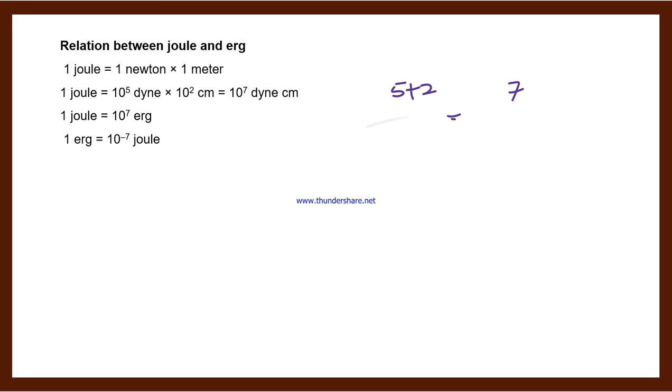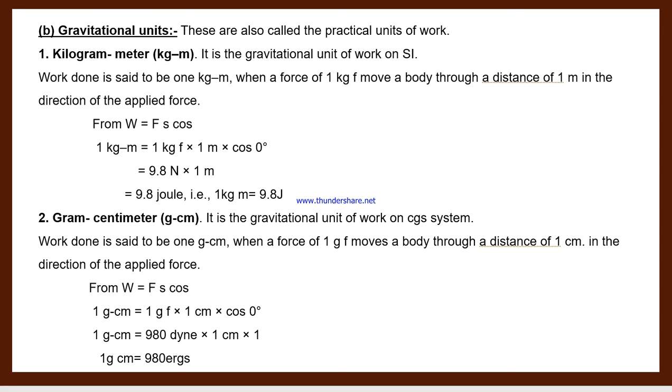Now gravitational units. These are also called practical units of work. Number one is kilogram-meter (kg-m). It is the gravitational unit of work in SI. Number two is gram-centimeter (g-cm). Kilogram becomes gram, meter becomes centimeter, so this is the unit in CGS system.